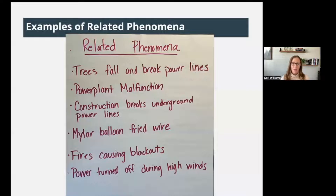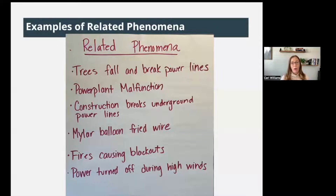Also fires causing blackouts. Here in California we have fires, and not only can a fire take down power lines, but sometimes we actually turn off the power due to high winds to prevent fires from happening — so the power gets turned off by the power company. You can go ahead and list some of these or other experiences your friends and family shared in your notebook under related phenomena.